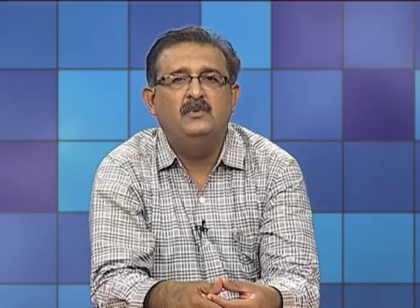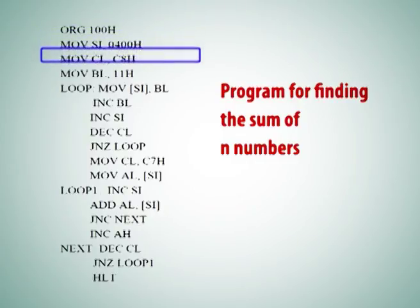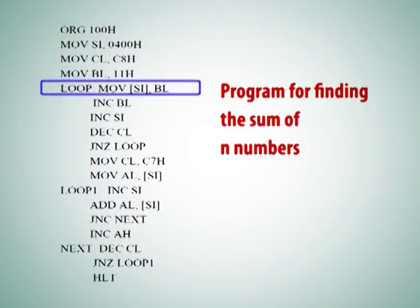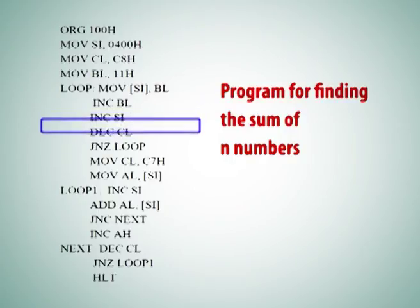The overall program for finding the sum of N numbers can be summarized as: ORG 100H, MOV SI, 400H, MOV CL, C8H, MOV BL, 11H. The loop sequence is: MOV [SI], BL; INC BL; INC SI; DEC CL; JNZ loop. The purpose of this program snippet is to initialize the contents of the memory buffer with values starting from 11H, then 12H, 13H, 14H, and so on, until all 200 elements are filled up in the memory buffer.